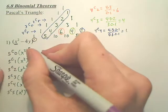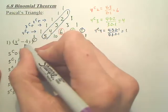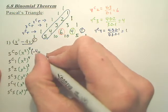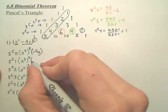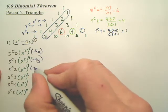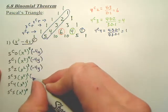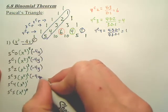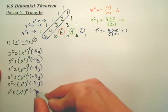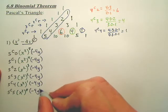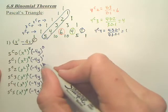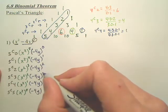And then the last term is going to be negative 4y. You write negative 4y all the way down, and you start with the zero power and work your way up to the fifth power.